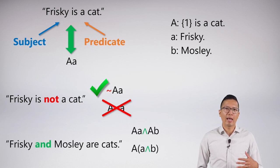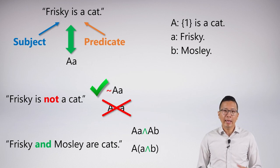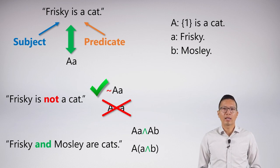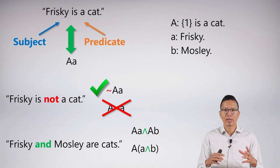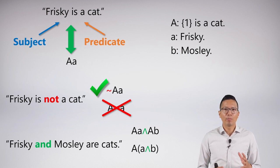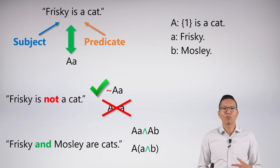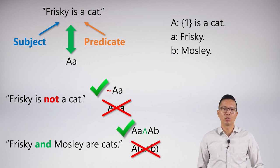For 'Frisky and Mosley are cats,' how do we do it? Again, we have two plausible options. I can say Aa and Ab, or I can say A and then put some parentheses and say a and b. The bottom one seems reasonable. I'm saying Frisky and Mosley are sitting in the predicate 'is a cat,' so they are cats. But this violates our basic syntax, which is we don't want logical connectives and other things in our predicate. So we're going to say the bottom one is no good, and we're going to do it the top way.